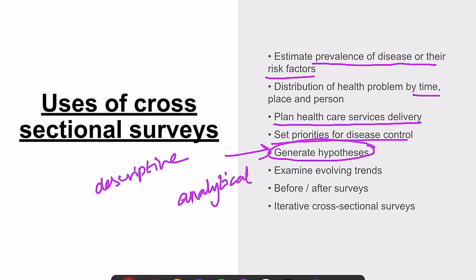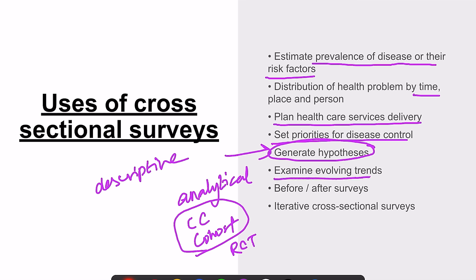To test a hypothesis, we need to move on to analytical study design — that is case-control or cohort. If you want to test any intervention, you can go for RCT. We can also examine evolving trends, do before-and-after surveys to study the effectiveness of interventions, and perform iterative cross-sectional surveys. The main purpose of cross-sectional surveys is to study prevalence, plan healthcare service delivery, set priorities, and generate hypothesis.